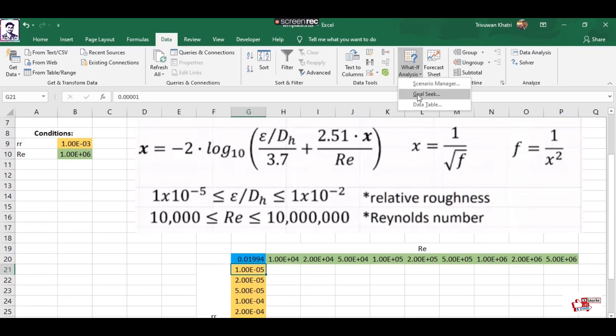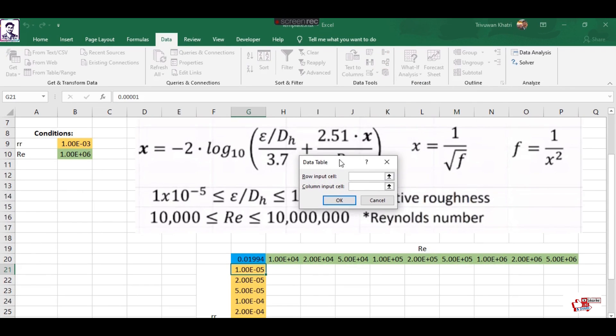Now I go to Data, What-If Analysis, and Data Table. In the row input cell, what we have here is Reynolds number, so I assign the Reynolds number cell here. And what we have in the column is relative roughness, so I assign the relative roughness value here.